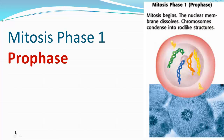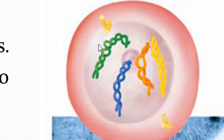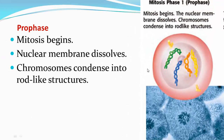The first phase of mitosis is prophase. During prophase, mitosis begins: the nuclear membrane dissolves and the chromosomes condense into rod-like structures. The chromatin is condensing into individual strands of DNA, and since the DNA has replicated itself, each chromosome now has an exact copy.